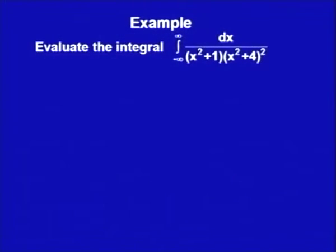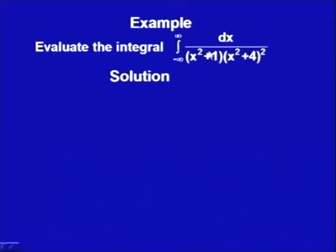Evaluate the integral from minus infinity to plus infinity of dx upon (x²+1)(x²+4)². This integral is an improper integral. The function 1/[(x²+1)(x²+4)²] is a rational function where the numerator is 1 and the denominator is a polynomial of degree 6. The denominator's first factor, x²+1, has factors (x+i)(x−i). The second factor, (x²+4)², has factors (x−2i) and (x+2i), both of power 2. This denominator has no real zeros — all zeros are in the complex plane.